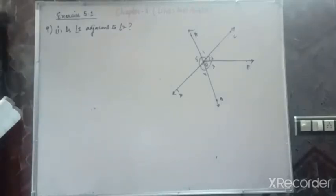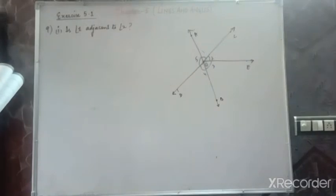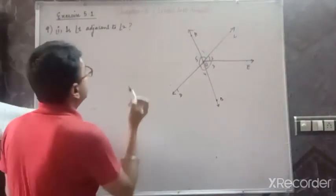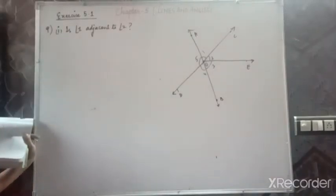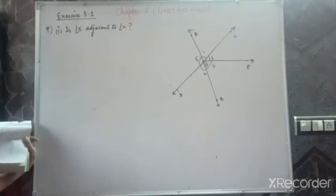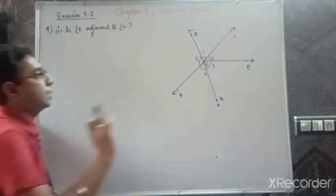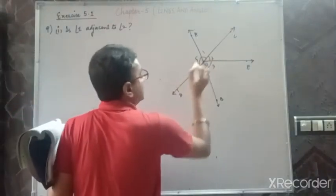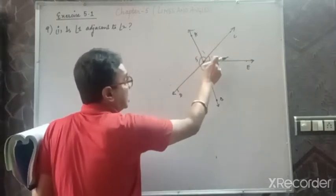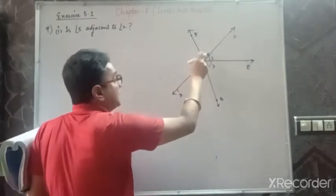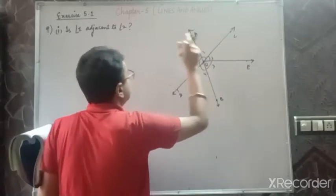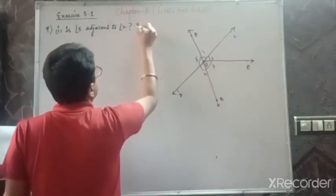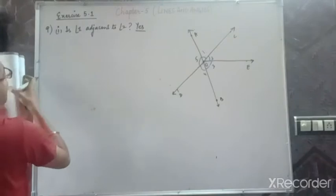Exercise 5.1, 9th question. The figure has already been drawn. First question: is angle 1 adjacent to angle 2? The conditions for adjacent angles are: they should have a common vertex, they should have a common arm, and the non-common arm must be on the other sides of the common arm. Angle 1 and angle 2 have common vertex O, they have a common arm, and the non-common arms are on the other side. It fulfills all conditions, so yes, they are adjacent angles.